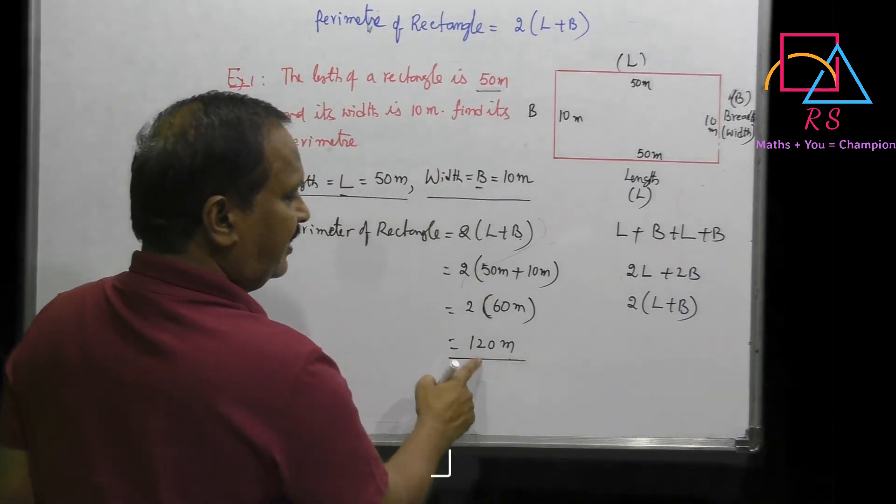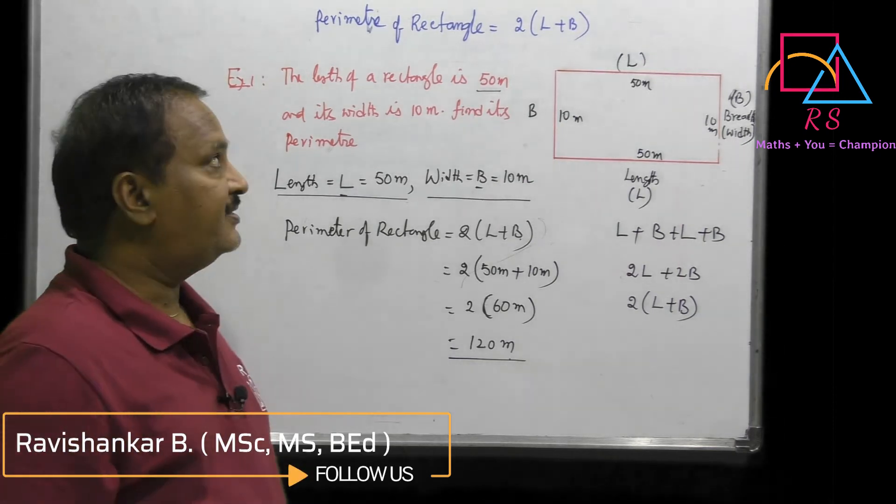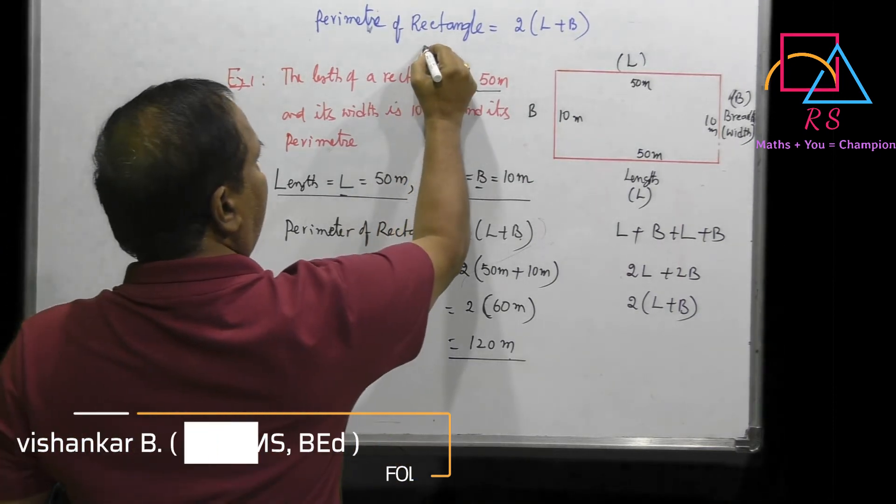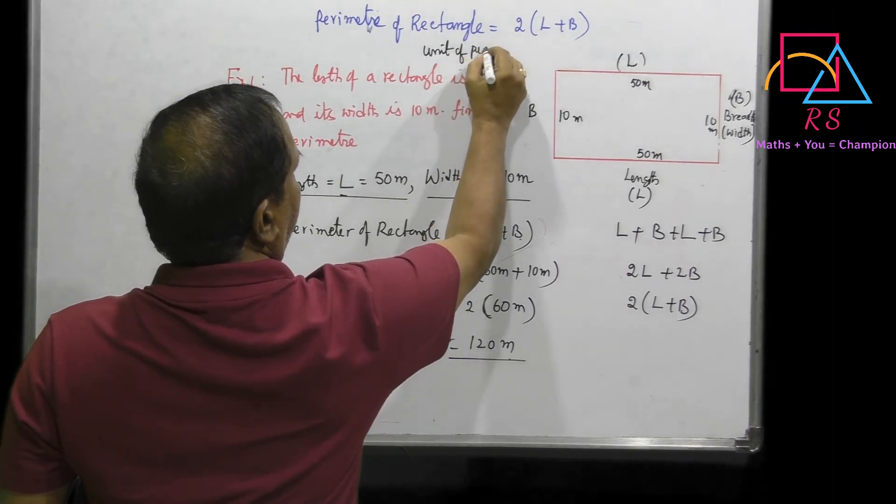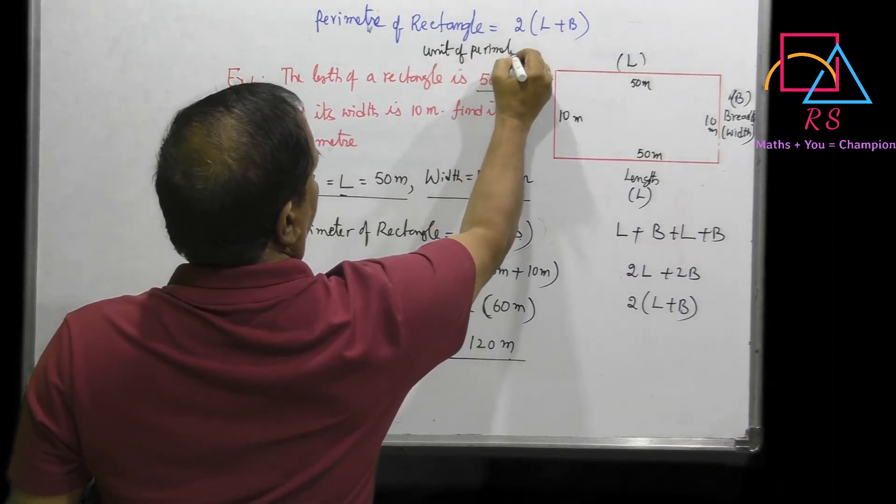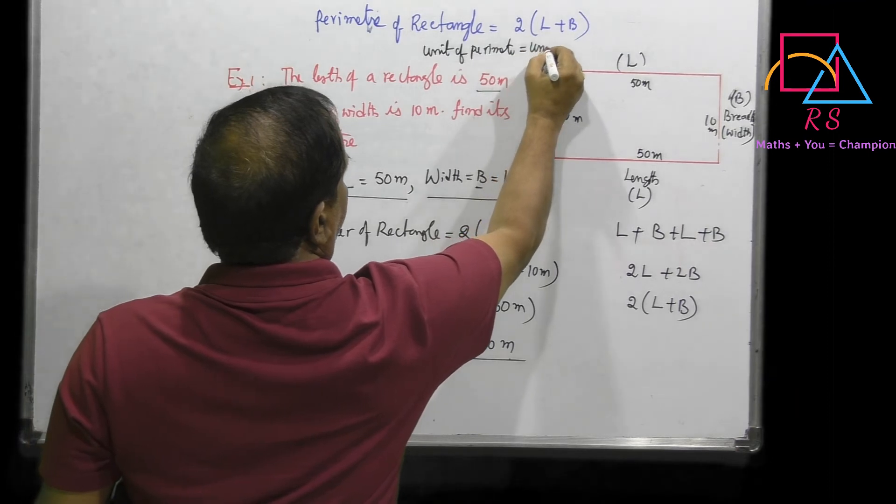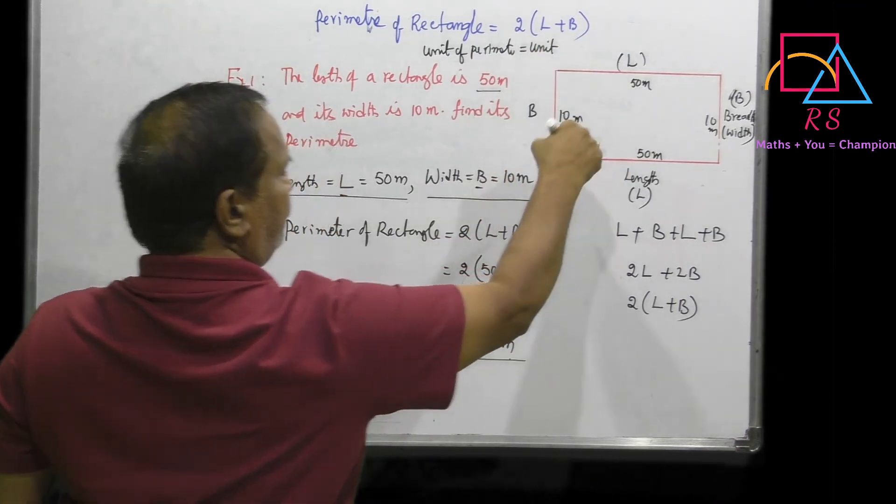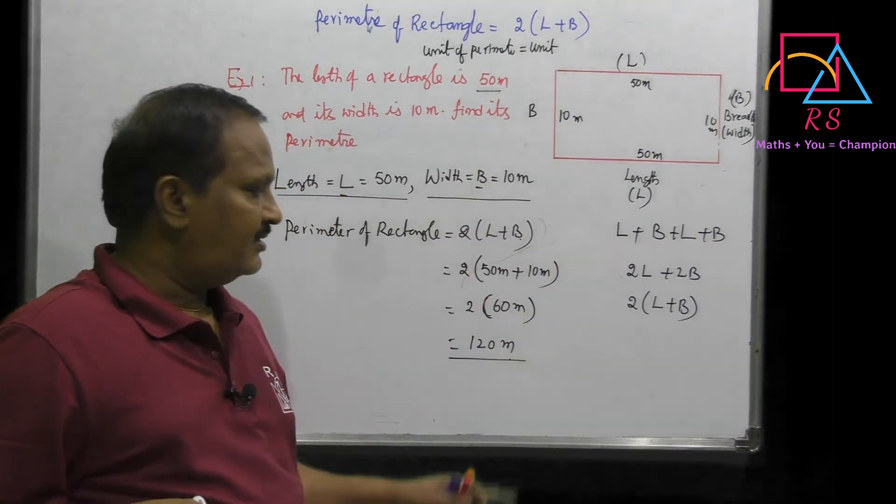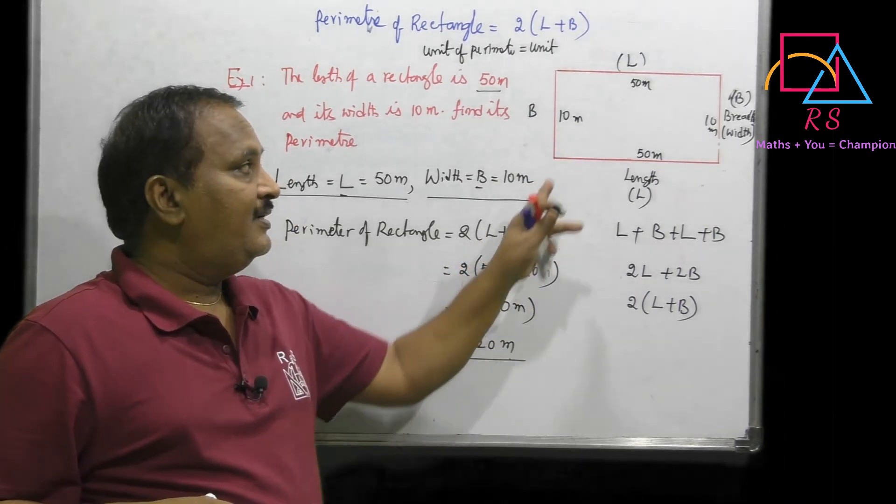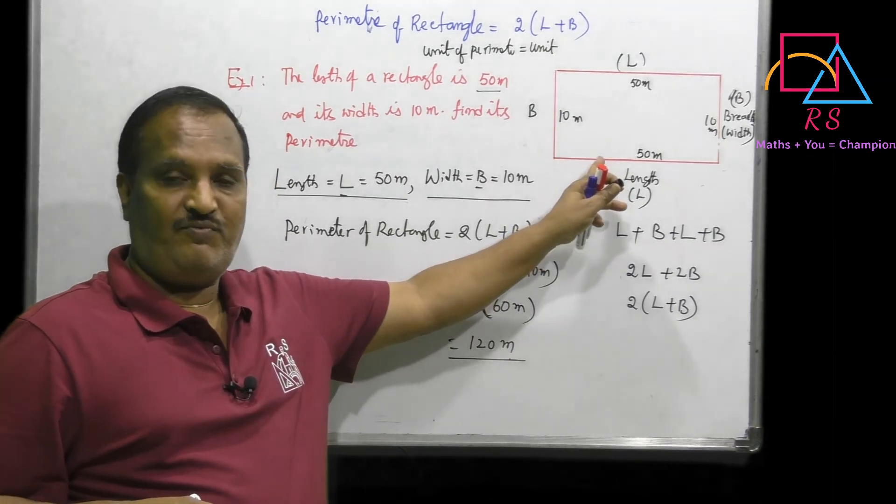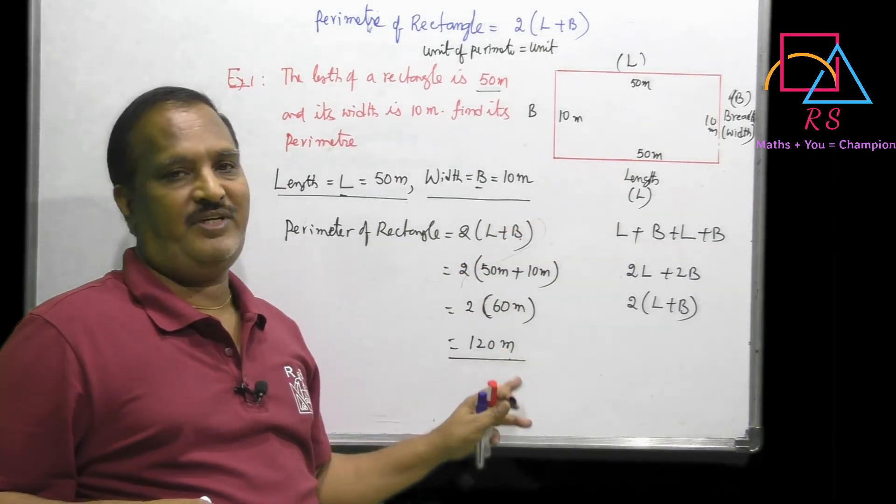The unit of perimeter is just units. If the measurements are in meters, it should be meters. If in centimeters, it should be centimeters. If in feet, it should be feet.